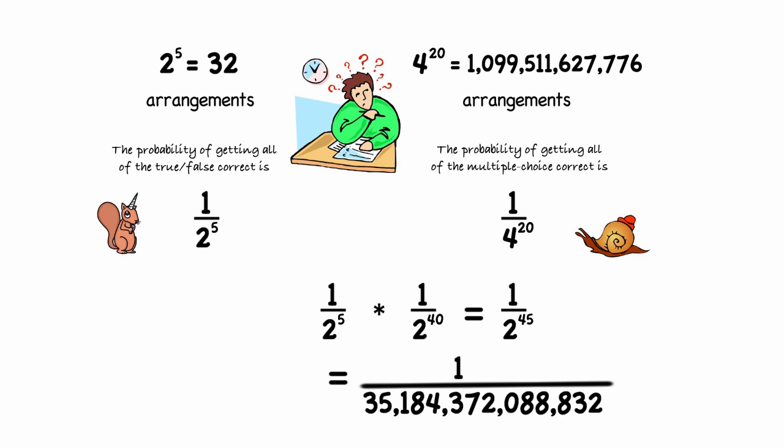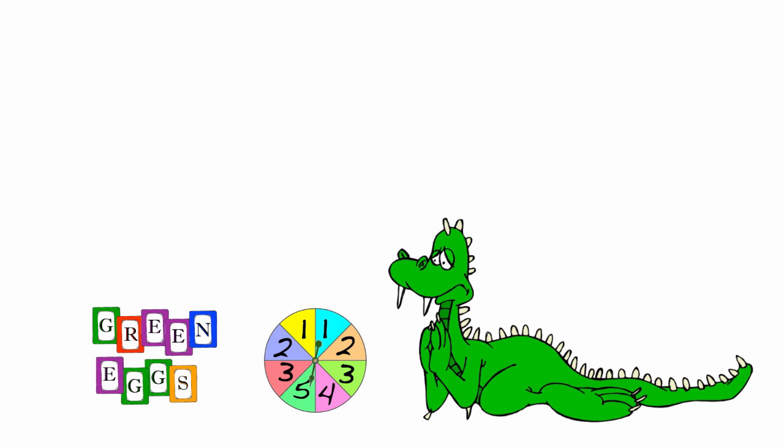I don't think guessing is going to help me in this situation. Let's look at another example. Using the spinner and the cards in the picture below, Toby spins the spinner, then picks a letter from the cards, and then spins the spinner again.